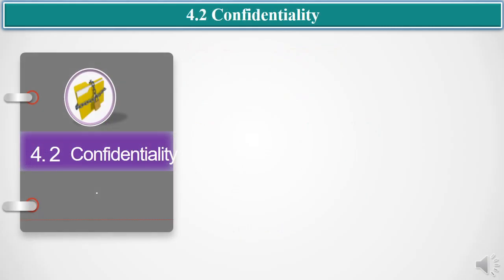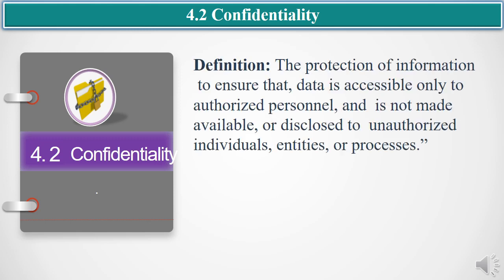Sub-clause 4.2 provides the requirements to maintain confidentiality. Prior to getting into the details of the requirements, let us understand its meaning. Confidentiality means the protection of information to ensure that data is accessible only to authorized personnel and is not made available or disclosed to unauthorized individuals, entities, or processes.